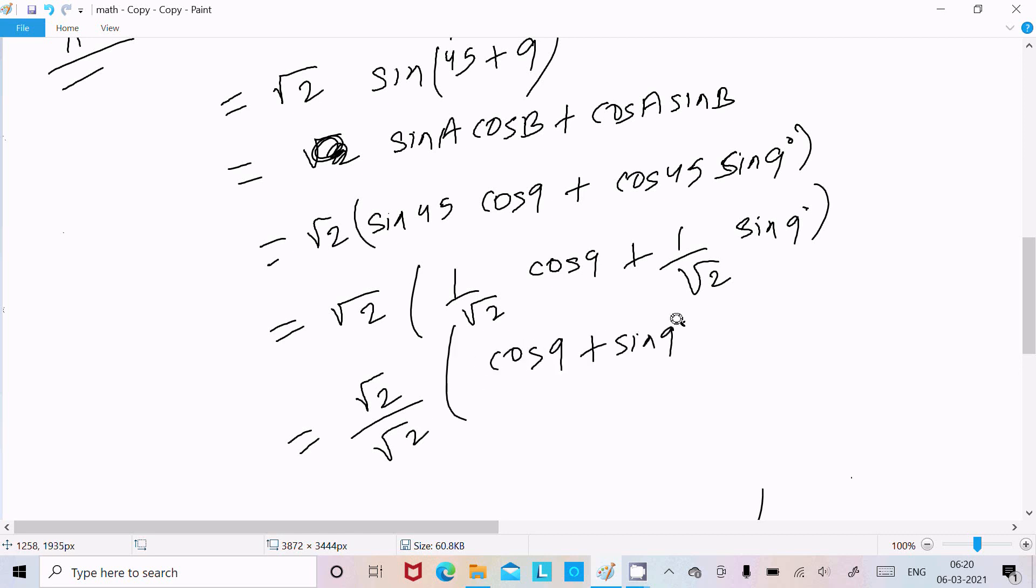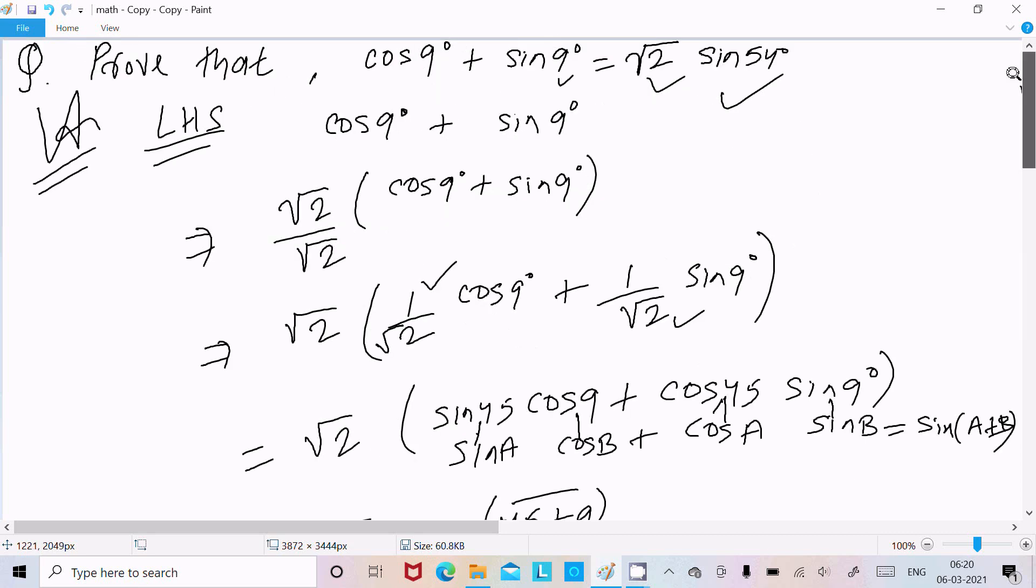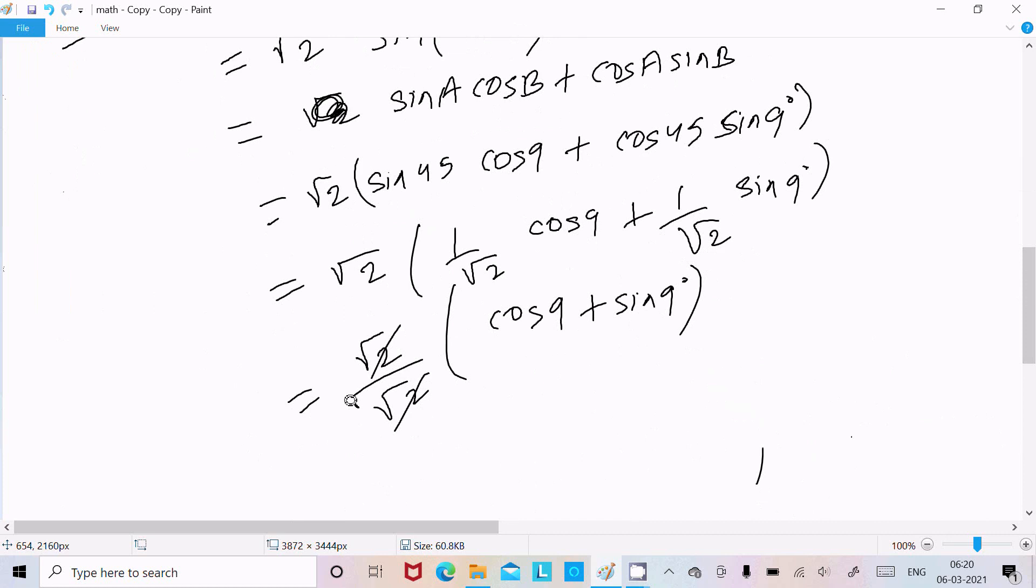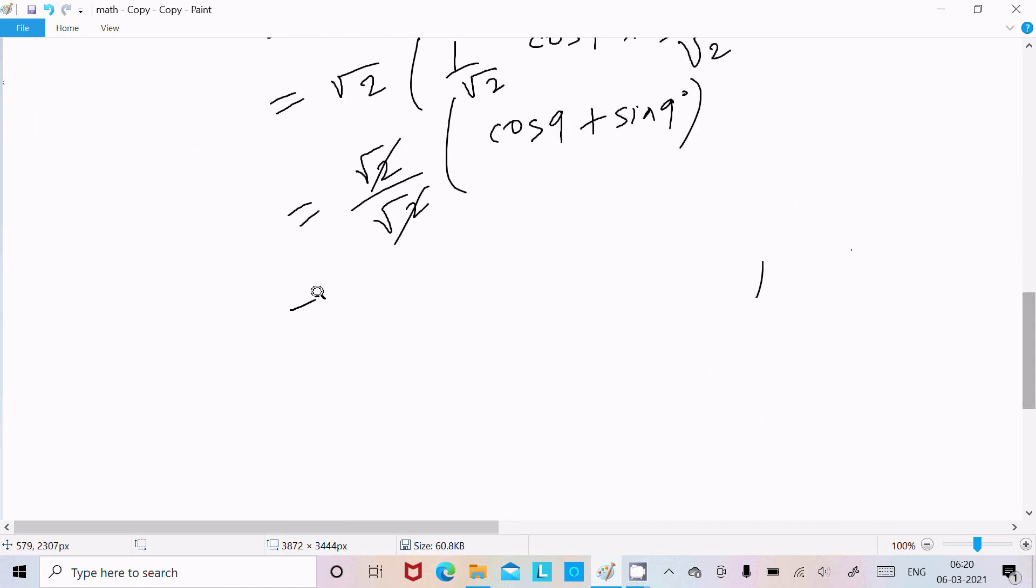So this is our intention to make that here √2, √2 cancel. So finally I got cos 9 + sin 9 = LHS = RHS proved.